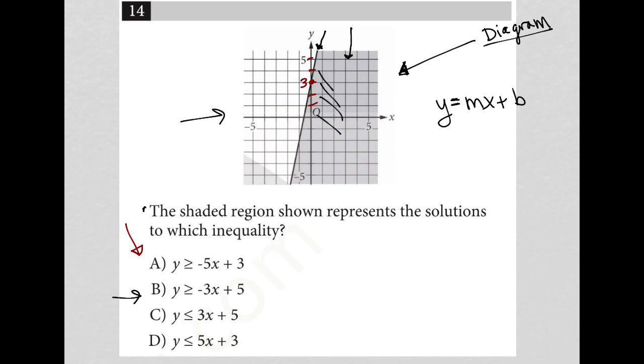The shading is to the right of this. But in terms of y, that would be considered below the line. So that means this really should say y is less than or equal to mx plus b. And that's pretty helpful because automatically that means choice a and b are gone. Right? Because these both have greater than or equal to.